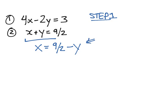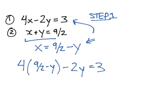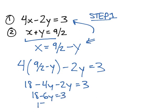And we take that and we substitute it back into the first equation. So, if x is equal to 9 over 2 minus y, then we have 4 times 9 over 2 minus y minus 2y is equal to 3. And now we just multiply it out. 4 times 9 over 2 is 2 times 9. That's 18 minus 4y minus 2y is equal to 3. 18 minus 6y is equal to 3. So, 15 is equal to 6y. So, 15 over 6 is equal to y.